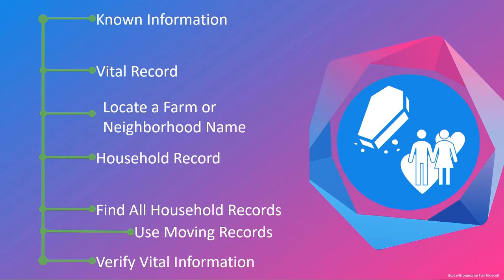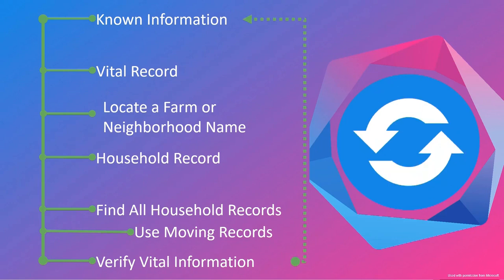After you've found all of the household records and traced this person through their life, you can verify the vital information and start the cycle back over again — moving from what you know to what you need to know.